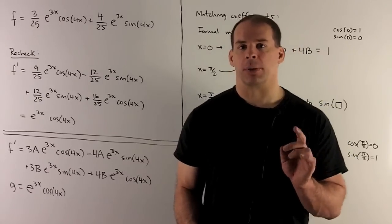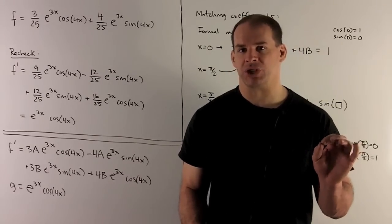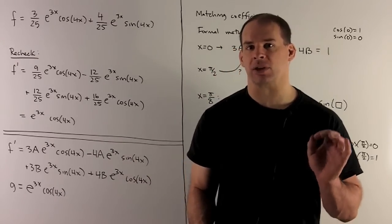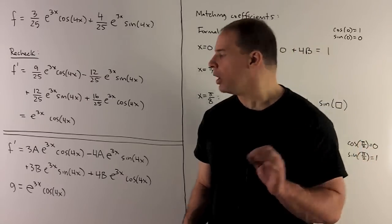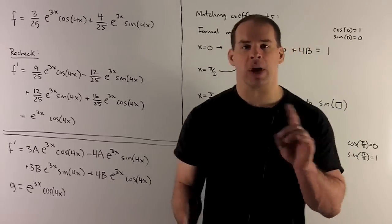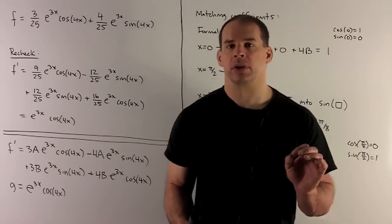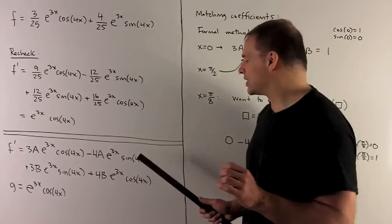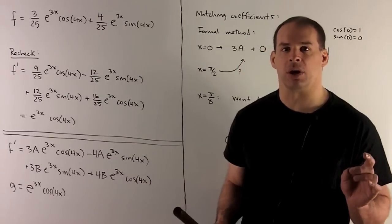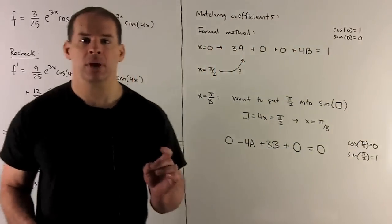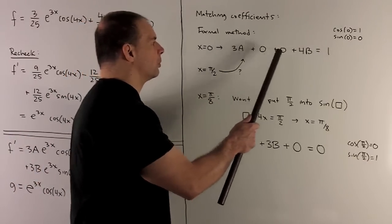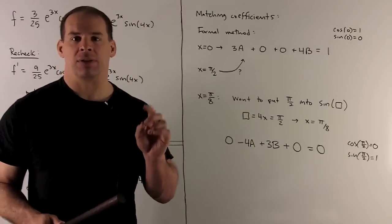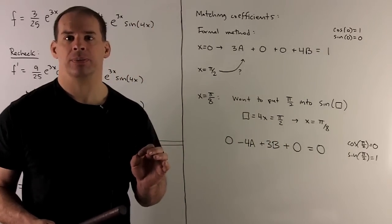Now, final note. Some students are a little bit bothered by this business of just matching things on both sides of the equation. What are we really doing here? If you want something concrete that you had to explain to someone, what would you say? Well, all we're doing is finding certain values of x that makes our equations collapse to the equations that we want. For instance, if I put a 0 in here, what's going to happen? Cosine of 0 is 1. Sine of 0 is 0. e to the 3x at 0, it's going to be e to the 0, which is a 1. When I put 0 in, our equation is just going to collapse to 3a plus 0 plus 0 plus 4b. And on the other side, I get 1. That's just what I got when I matched the e to the 3x cosine 4x terms.